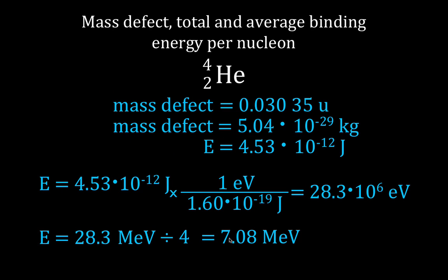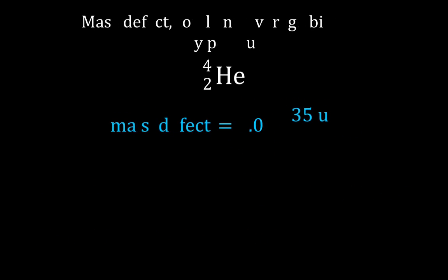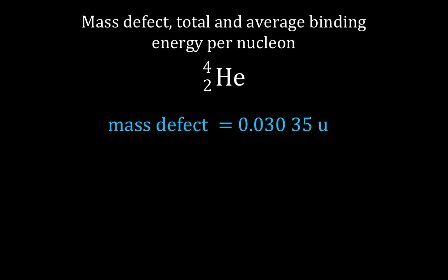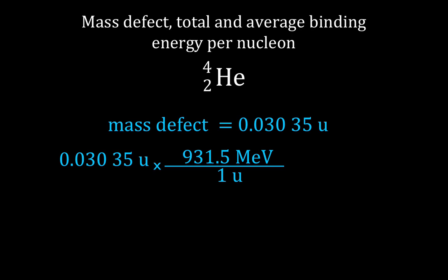So now there's one other thing. We converted into mega electron volts, but there's a slightly easier way if you're aware of this, because there's a direct conversion factor. This is all just conversions and conversion factors. There's a direct conversion between atomic mass units and mega electron volts — we know that one atomic mass unit is also equal to 931.5 mega electron volts.